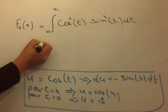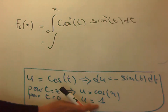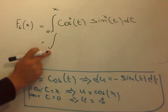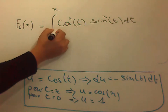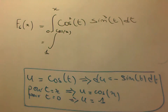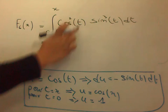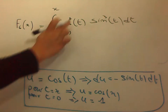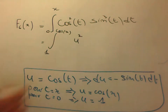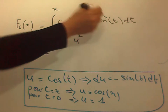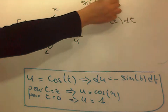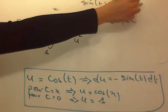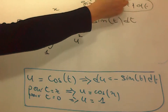Donc f6 de x égale à l'intégrale entre 1 et cosinus de x. Cosinus au carré de t — on a posé u égal cosinus de t — donc ici c'est u au carré. Sinus puissance 3 de t, on peut écrire ça comme sinus au carré de t fois sinus de t, et tout ça c'est moins du.